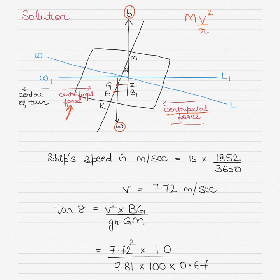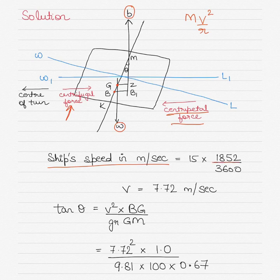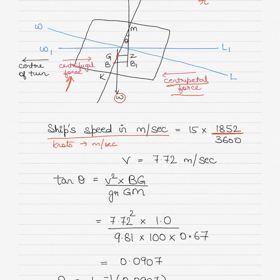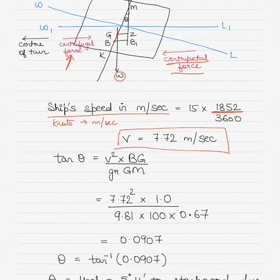Now let's solve this. The ship speed in meters per second is 15 multiplied by 1852 divided by 3600. We are converting 15 knots to meters per second: one knot equals 1852 meters per hour, and there are 3600 seconds in one hour. Therefore the velocity of the ship is equal to 7.72 meters per second.